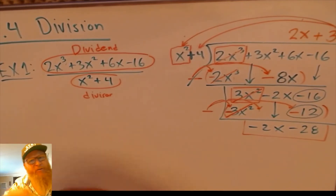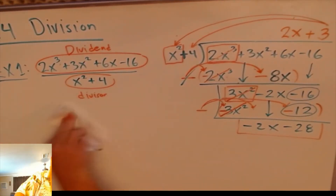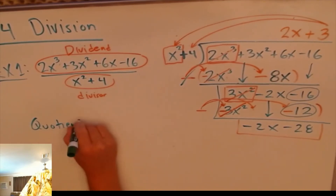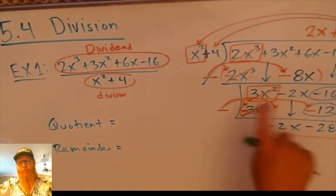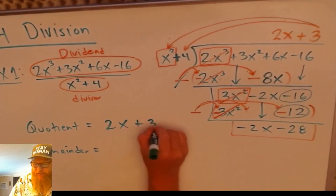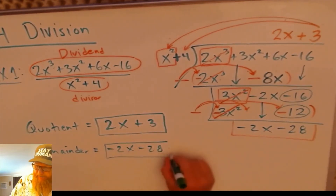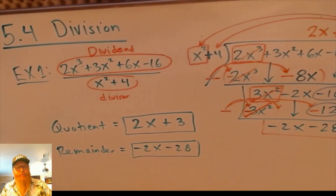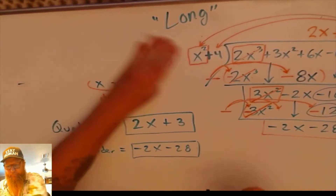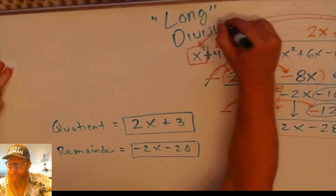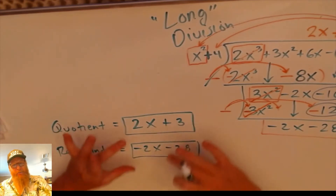So for Example 1, the quotient is 2x plus 3 and the remainder is negative 2x minus 28. That's the long division algorithm, or simply known as long division. Let's do a few of these before I teach you another way to write the answer.